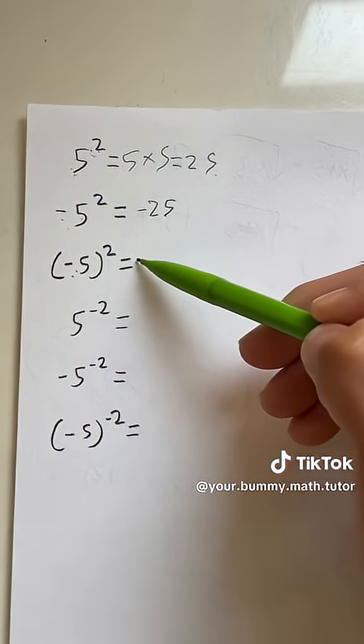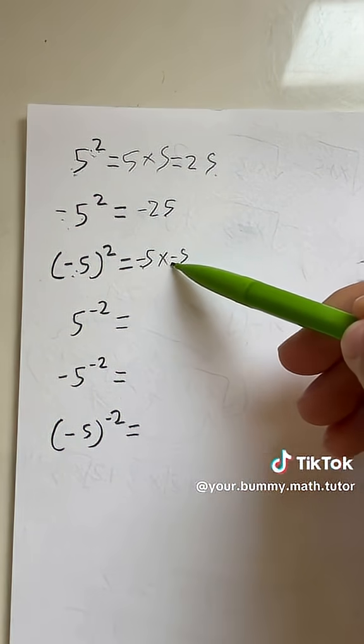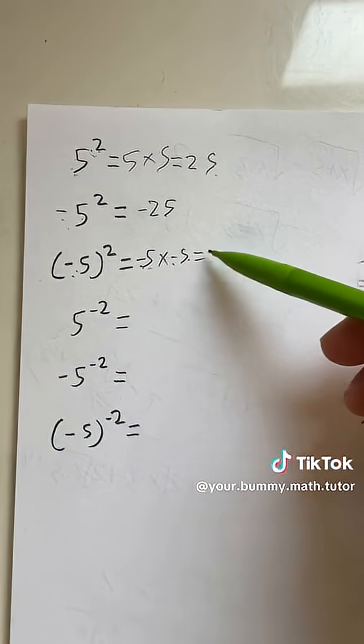But when it's inside the parentheses, this basically means negative 5 times negative 5. Negative times negative is positive. 5 times 5 will give us positive 25.